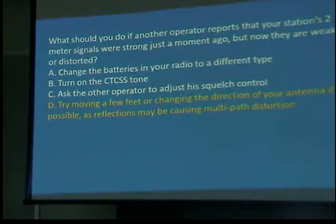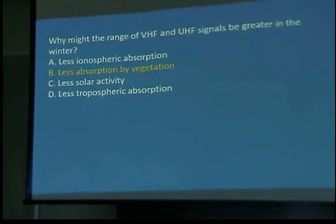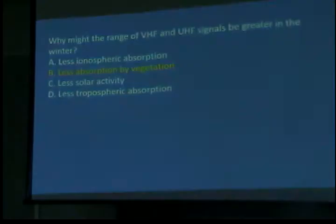Why might the range of VHF and UHF signals be greater in the winter? This is not a joke — less absorption by vegetation. Oak leaves absorb signals significantly, and cornfields are bad too. That was actually a big problem with the 800 MHz system in the county. Maple leaves are a quarter-wave at 800 MHz and absorb it like you wouldn't believe. The system was planned in the winter, and nobody thought about the vegetation effect.